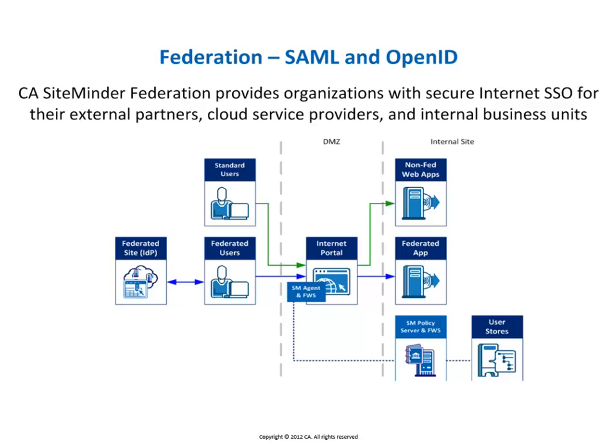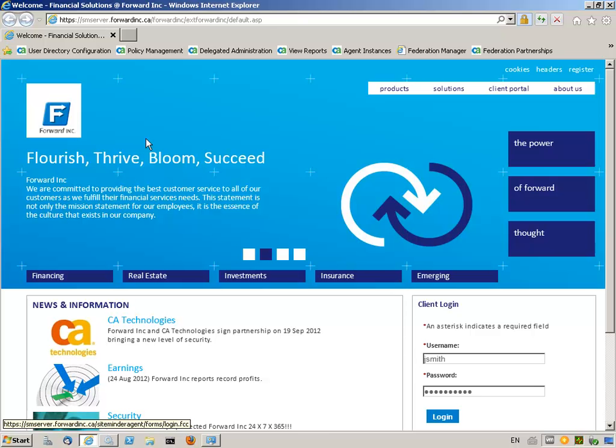The OpenID provider sends an authentication response to SiteMinder. The policy server verifies the authentication response, completes the authentication process, and authorizes access to the resource.